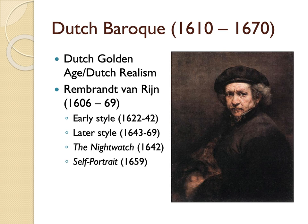Dutch art was not very public — it was displayed in the home. As a result, lots of Dutch art is smaller in size and more intimate. If you look at Dutch paintings in museums, they're usually quite small compared to Italian Baroque art. The subjects of Dutch Baroque usually include still life and landscape paintings, scenes from domestic life celebrating domesticity, and scenes with animals.